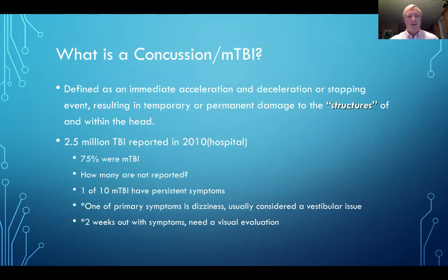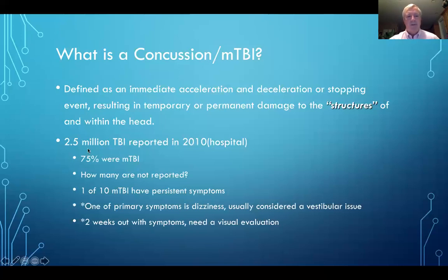First of all, what is a concussion? It's defined as an immediate acceleration, deceleration, or stopping event, resulting in temporary or permanent damage to the structures of and within the head. An injury can occur just by bumping your head, where you now have damage either to a localized area or to a long pathway. Two and a half million brain injuries were reported in 2010 here in the States — these are hospital visits.